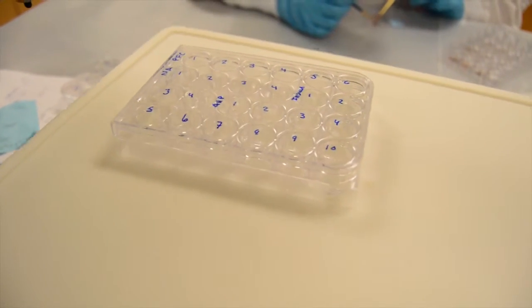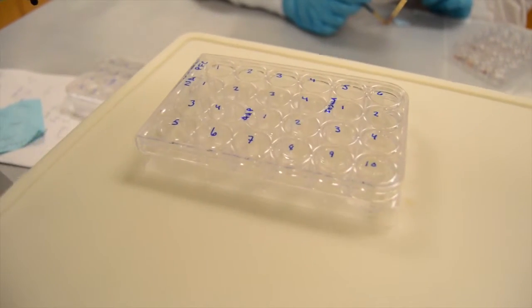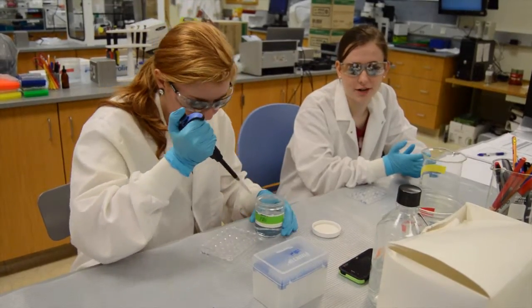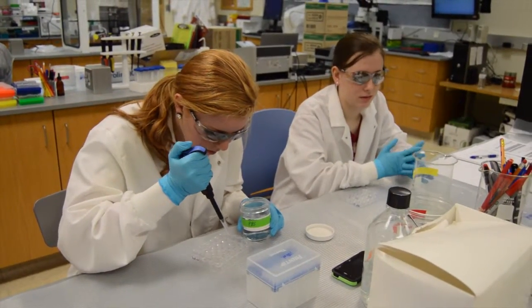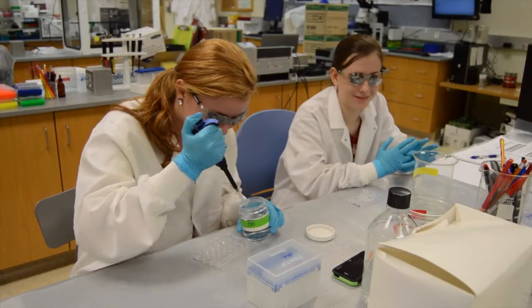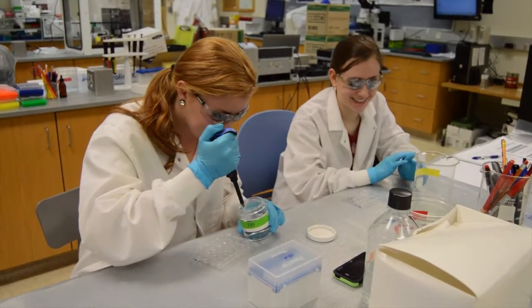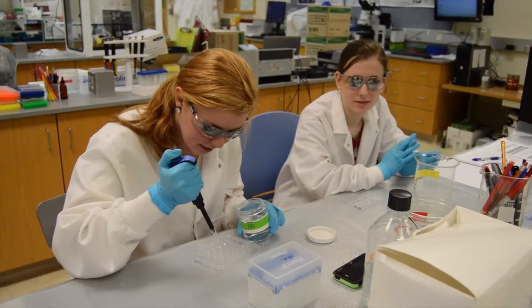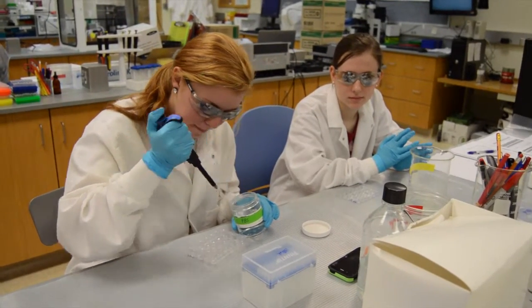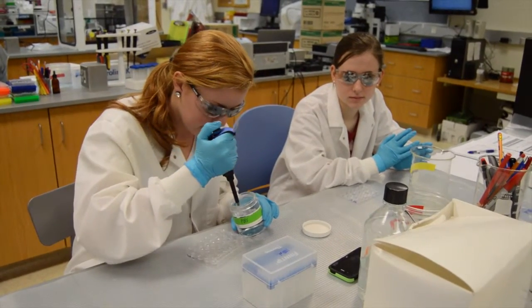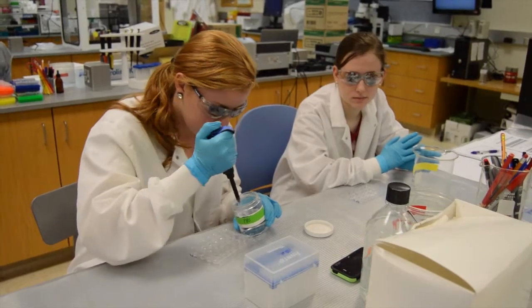During sectioning, place each section in a 30-well COSTAR tray with approximately 300 microliters of phosphate buffer saline, or PBS. After sectioning is complete, move on to immunocytochemistry. Wash the brain sections with PBS three to five times, shaking for five minutes after each wash.